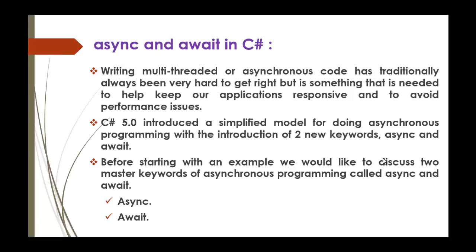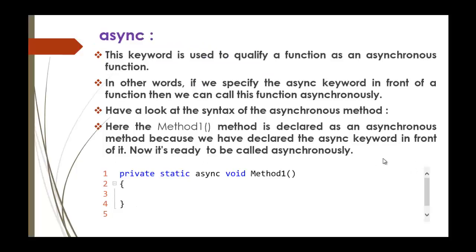Before starting an example, I would like to discuss the two master keywords in asynchronous programming: Async and Await. Let us understand what the Async keyword is. For example, if you have a method and you want to make it an asynchronous method, you simply add the Async keyword in front of that method. You can observe I have a method called Method1, and to make it asynchronous I just added the Async keyword in front of it. Now you can call this Method1 asynchronously at any point of time.